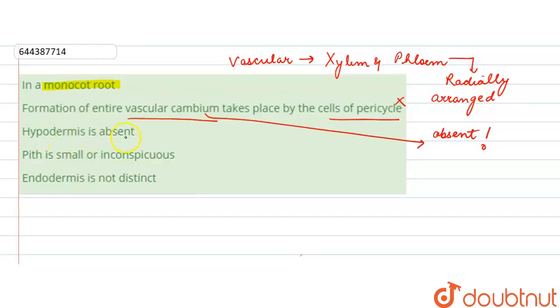The second is hypodermis is absent. Now hypodermis is made by the cortex cell, and in monocot roots the hypodermis is absent. So this statement is correct.